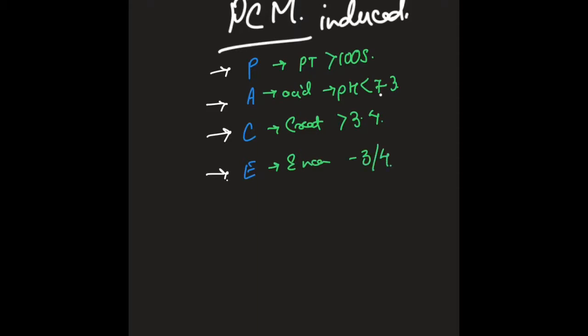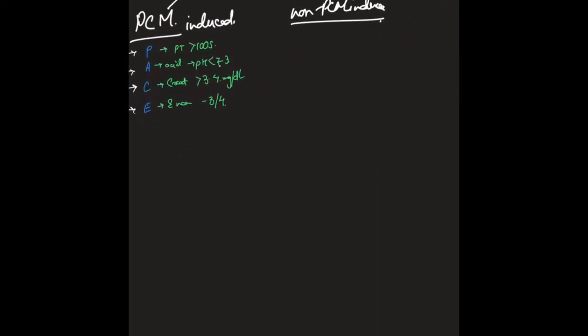And encephalopathy is for E and that should be of at least grade 3 or 4. Creatinine is 3.4 mg per deciliter; of course in the actual King's criteria it's mentioned in micromoles per liter and that is around 300.